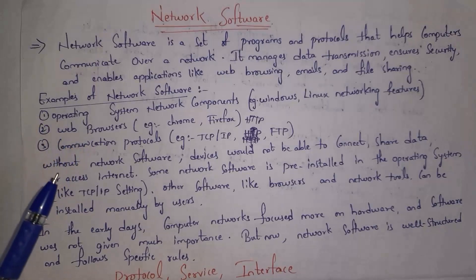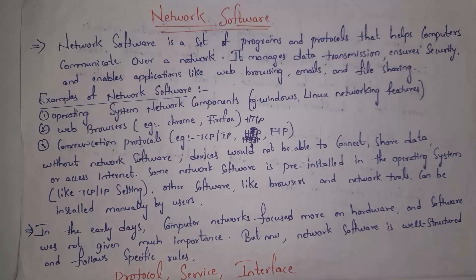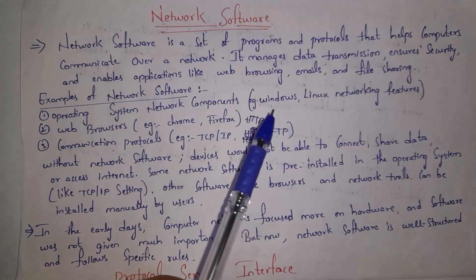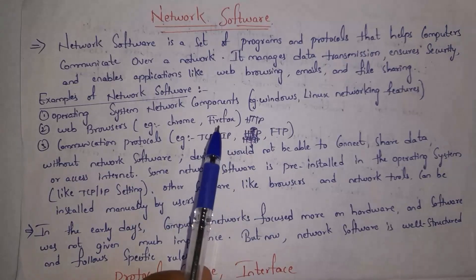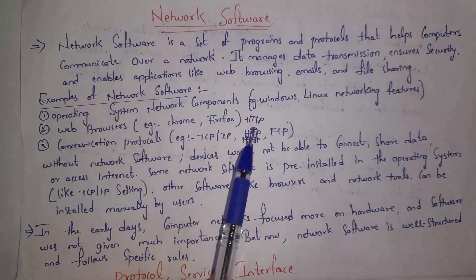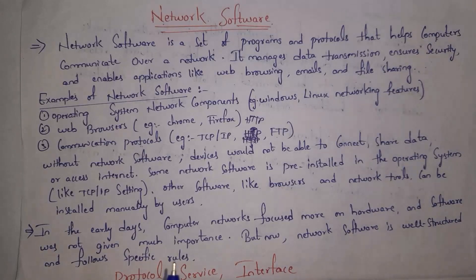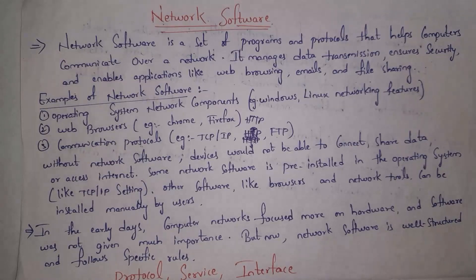The second example is web browsers. Web browsers like Google Chrome and Firefox contain network software. In web browsers, we do web browsing, send emails, and share files — all of these happen because of network software. Web browsers use HTTP, that is Hypertext Transfer Protocol, as one of the most famous protocols for communication. TCP/IP, FTP, and HTTP are all communication protocols. Without network software, computers cannot communicate in a network. Some network software like TCP/IP is pre-installed in the operating system, whereas other software like web browsers must be installed separately.